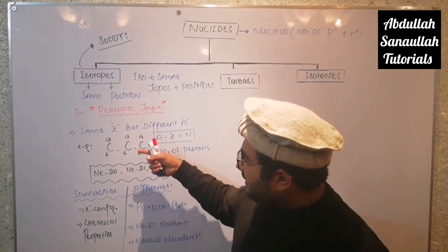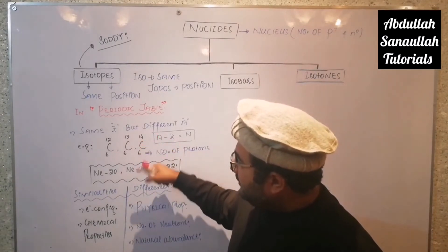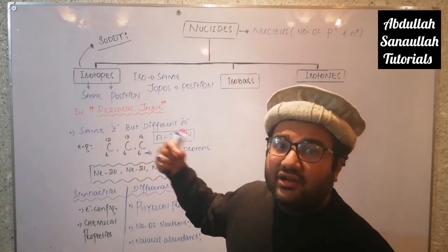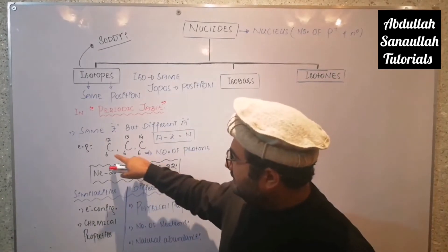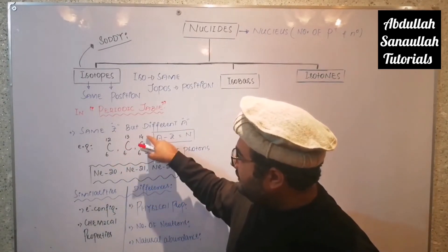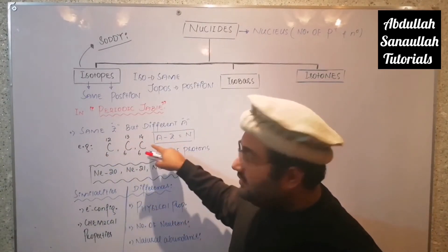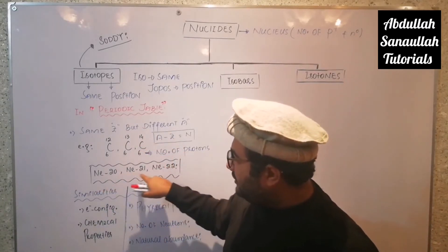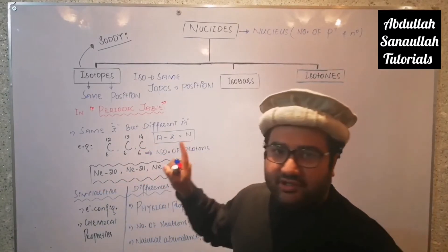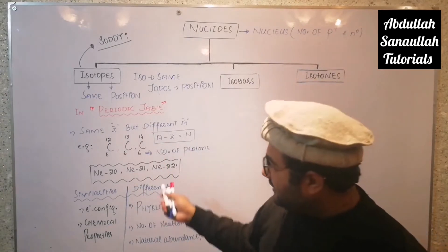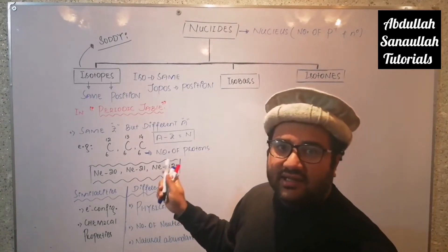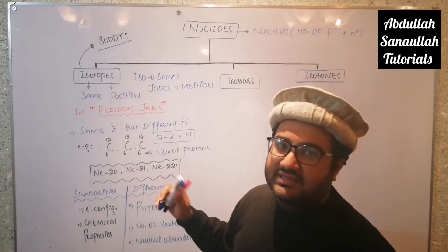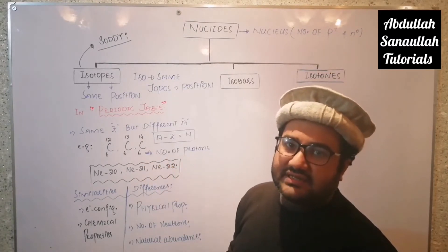Isotopes of carbon and neon are written in different fashions representing two ways to denote isotopes. In the notation C-6-12, C-6-13, C-6-14, both atomic number and mass number are shown. In the second way — neon-20, neon-21, neon-22 — only the mass number is mentioned because the atomic number is the same and therefore not repeated.